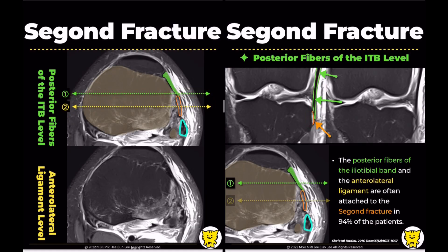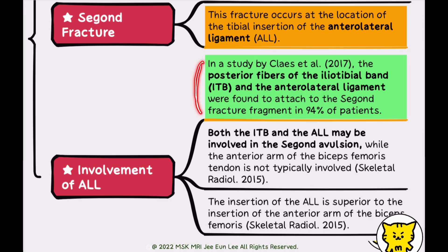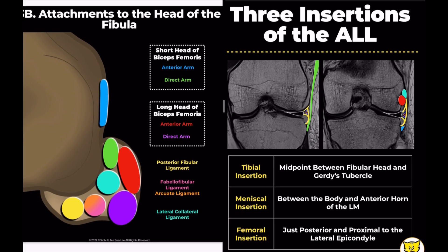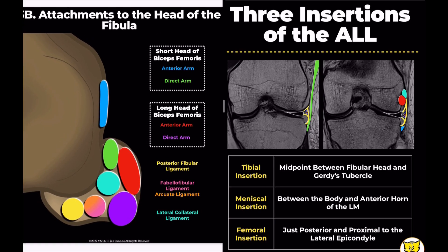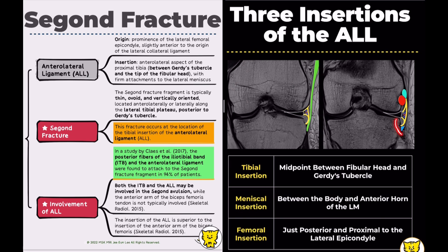According to a 2015 Skeletal Radiology study, both the iliotibial band and the anterolateral ligament may be involved in a Segond avulsion, whereas the anterior arm of the biceps femoris tendon is not typically involved. The structure highlighted in blue here is the anterior arm of the biceps femoris tendon. However, in cases of very large Segond fractures, there is potential involvement of the anterior arm of the short head of the biceps femoris tendon.